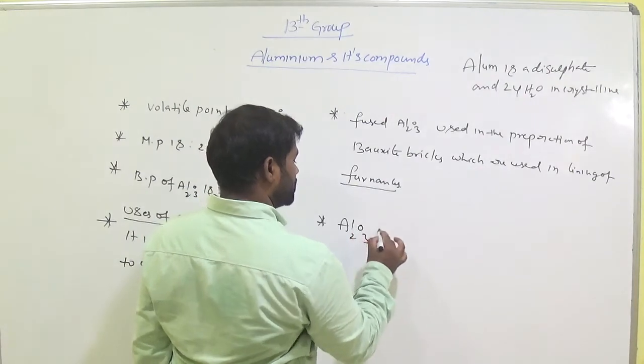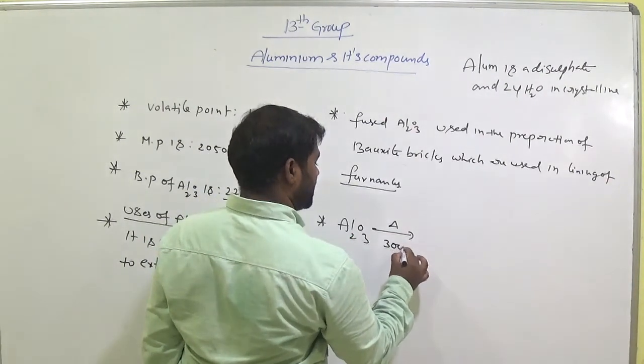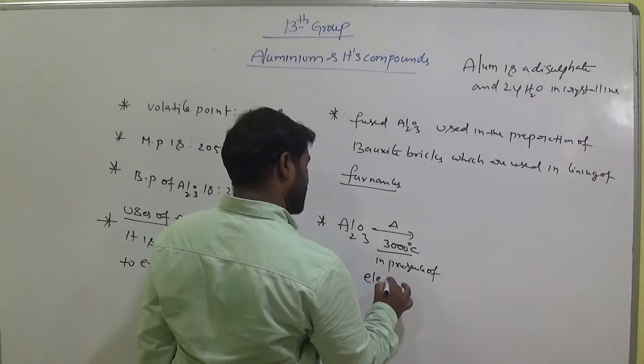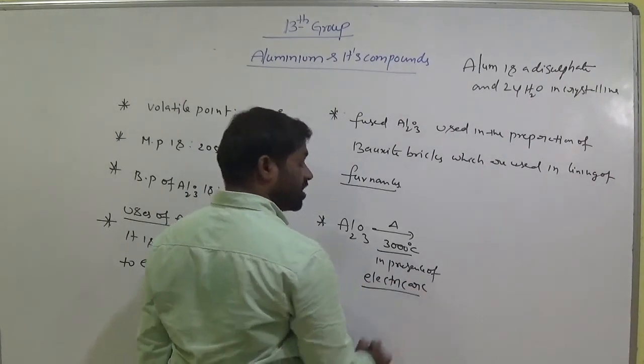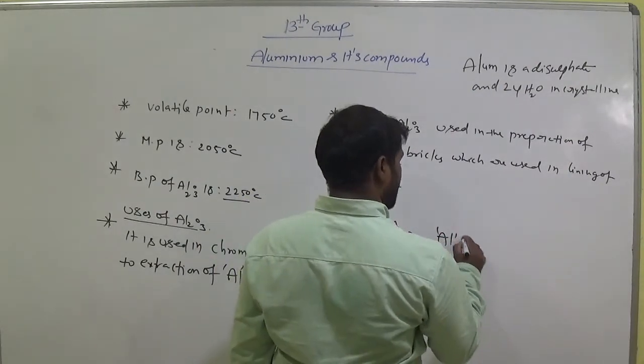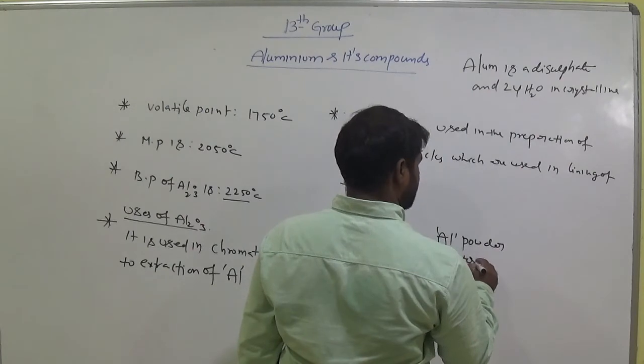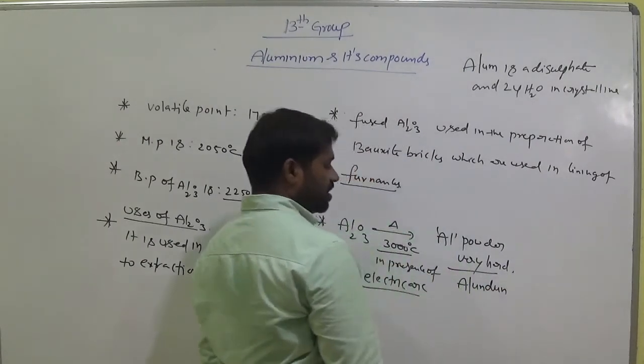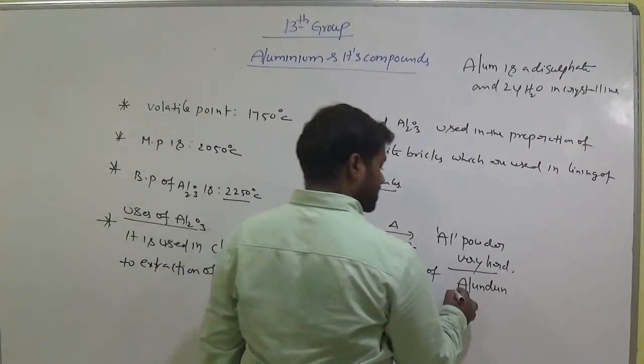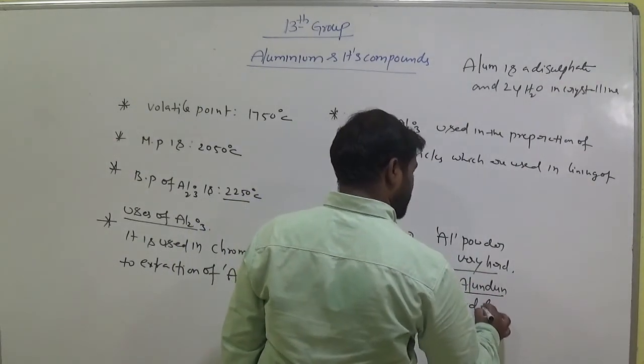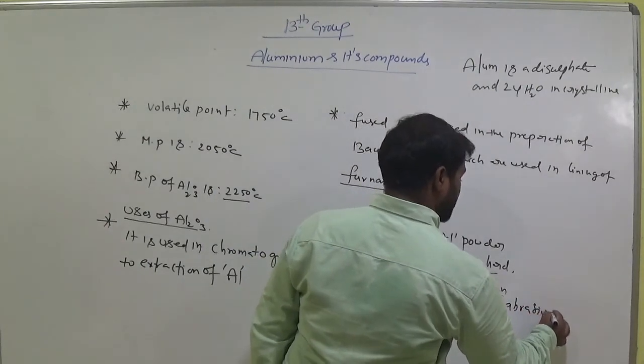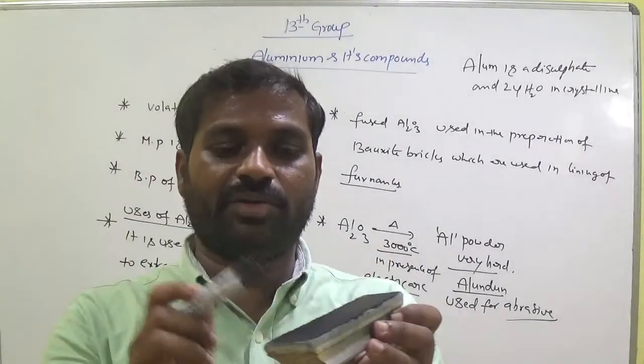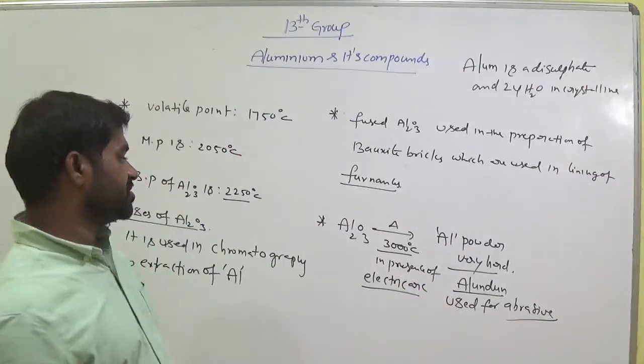Al₂O₃ heating at 3000 degree Celsius above in presence of electric arc, electric arc means in presence of electricity, it produces Aluminium powder that is very hard. We call it is corundum. This powder, this material is used for abrasive. Abrasive means for smoothing the material, we can use this melting. So if there is any rough material, we can smooth that material by using this strong Aluminium powder. That is called as abrasive purpose.